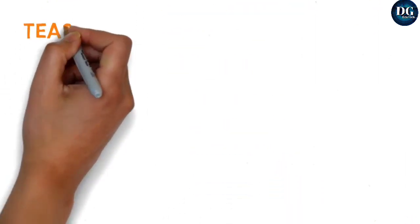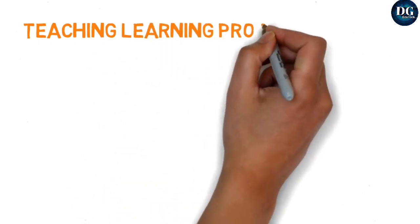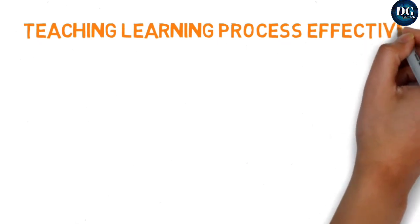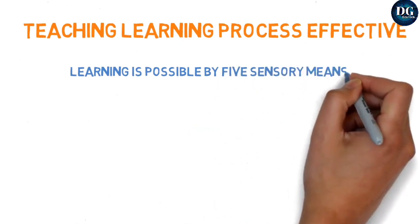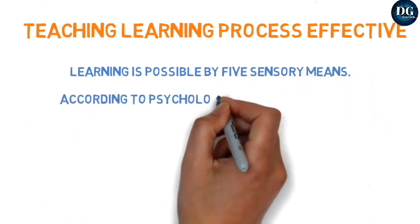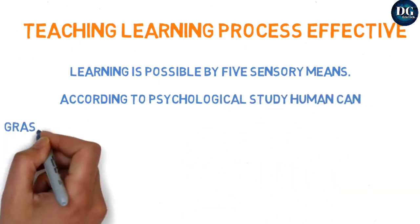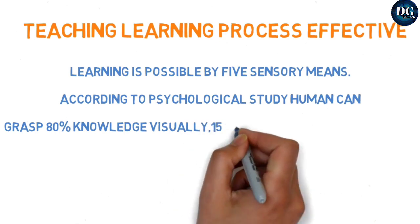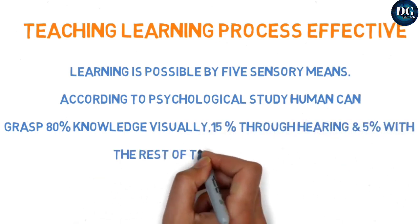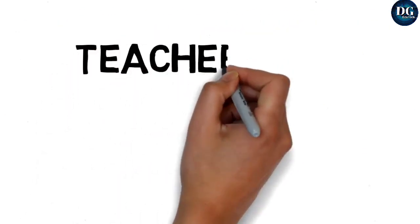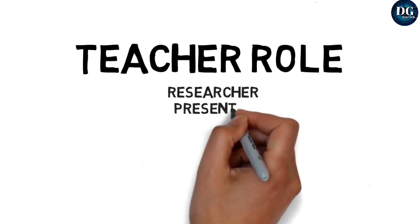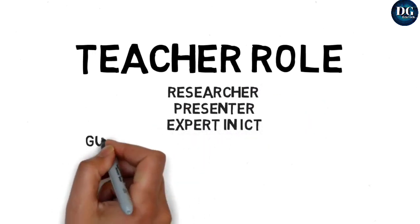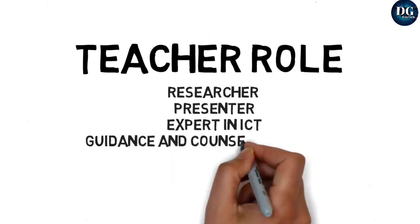ICT has greatly helped in teaching and learning. Teaching and learning are made possible through the help of ICT. As psychology tells us, human beings grasp knowledge visually at 80%, through hearing at 15%, and through other sensory means at 5%. In teaching, the teacher plays a key role as researcher, presenter, and expert, and provides guidance and counseling to help students develop their skills.